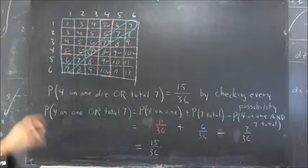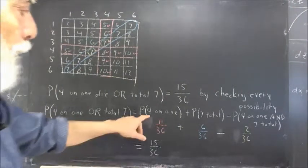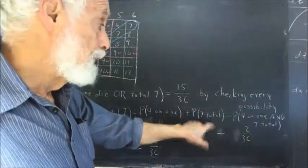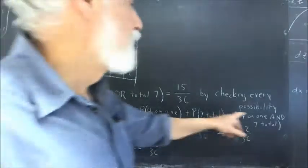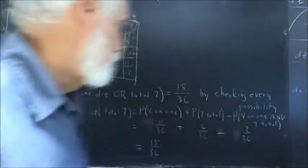But, if we use the rule, probability of 4 on one die or a total of 7 equals the probability of 4 on one die plus probability of 7 total minus the probability of getting 4 on one die and 7 total.